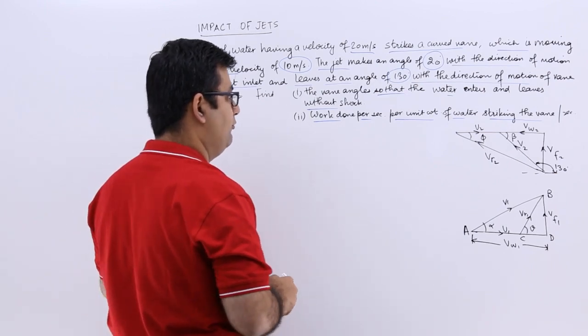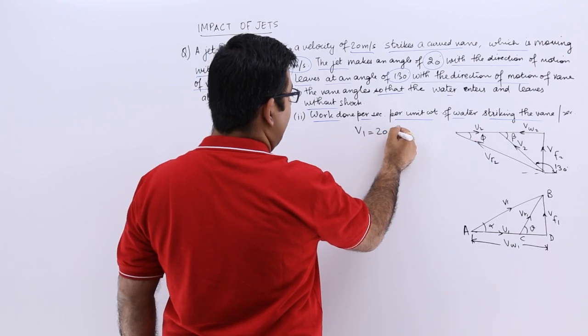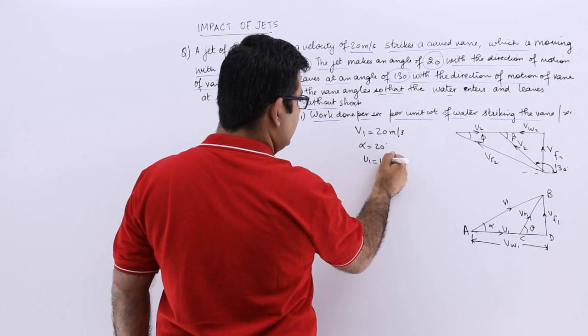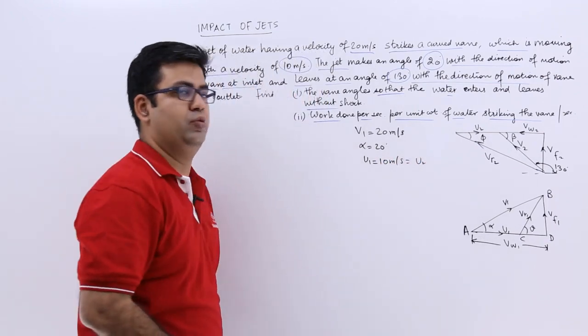Let's write down this information. V1 is 20 meters per second, alpha becomes 20 degrees, and U1 is 10 meters per second, and I will say that this is equal to U2 as well.